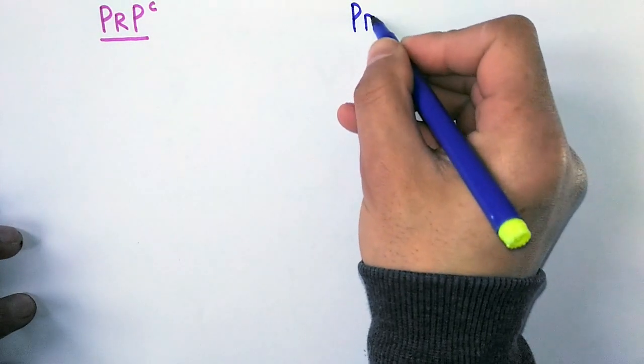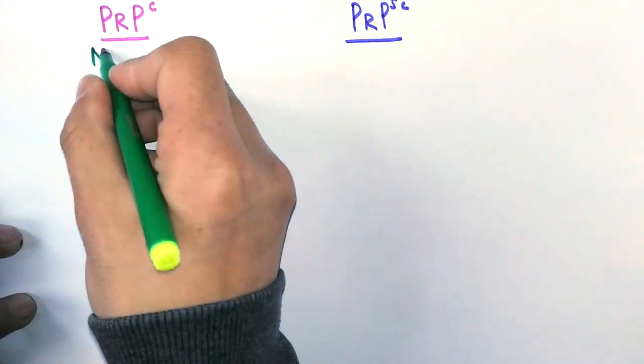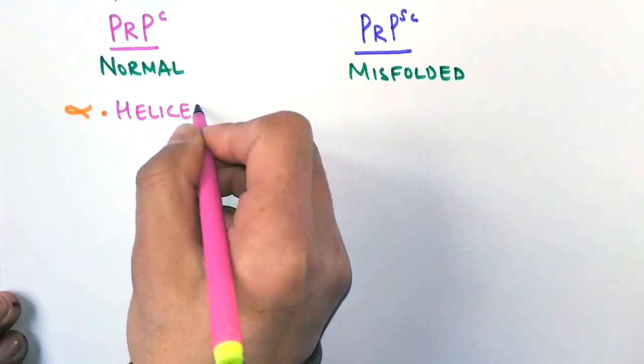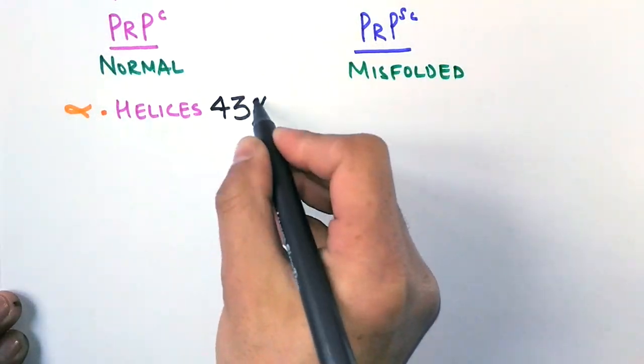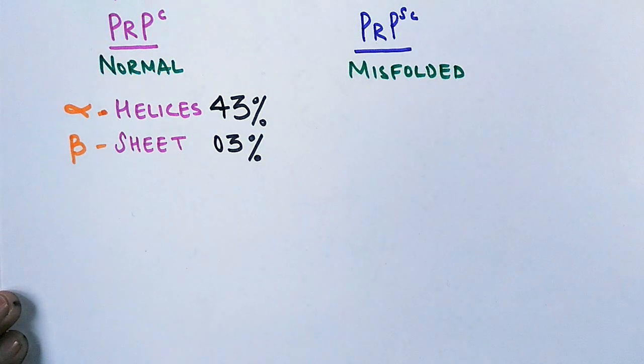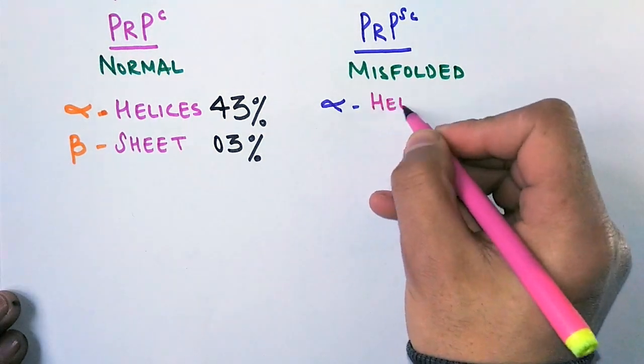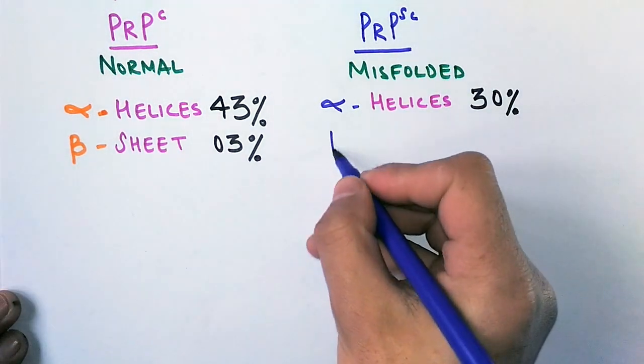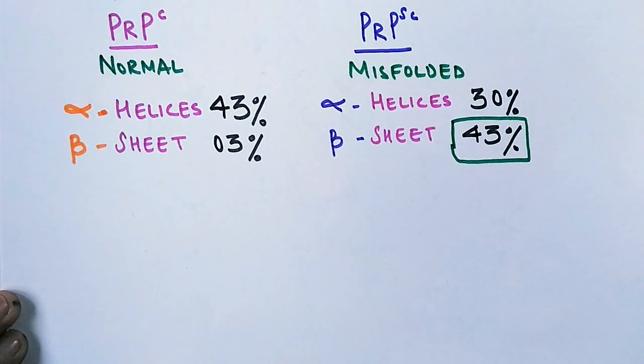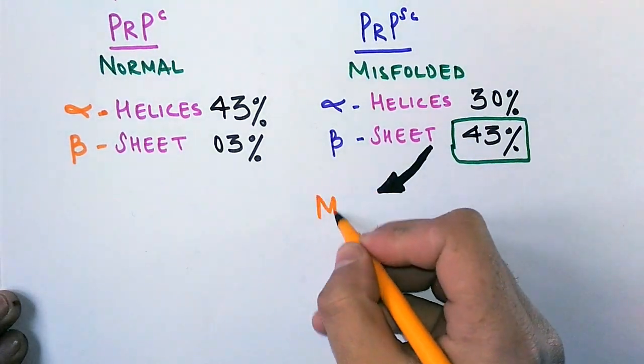If we see the structure of both these proteins, the normal and misfolded one, first of all we see the PrP^C, that is the normal protein. We have alpha helices here, almost 43 percent, and beta sheets are only 3 percent here. On the other hand, we see the misfolded version, that is the prion. It has got alpha helices 30 percent, beta sheets as high as 43 percent, almost 40 percent extra from the normal version. So it's this 43 percent, these beta sheets, that are resistant to the protease enzyme. That makes them protease resistant.